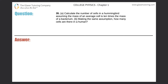Number 35, letter A. Calculate the number of cells in a hummingbird, assuming the mass of an average cell is 10 times the mass of a bacterium. So we have to calculate the number of cells in a hummingbird, and they say the mass of an average cell is 10 times the mass of a bacterium.